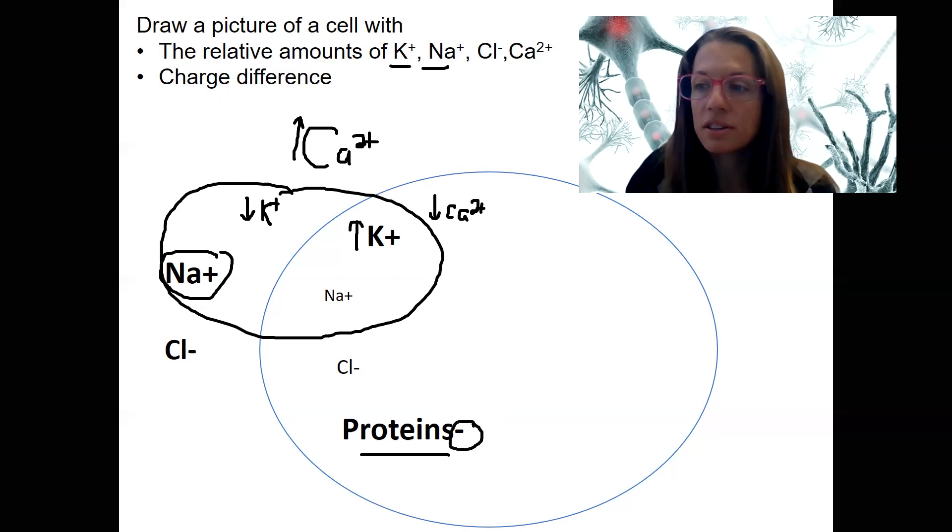If you wrote this charge difference, it was about minus 70 inside the cell. Now I have calcium there twice. So I am going to erase this one. Have it right there.